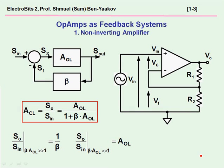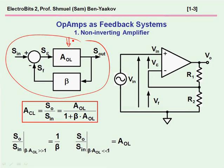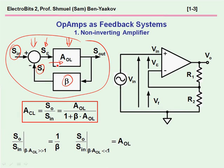The classical feedback model shown here includes the amplifier or the plant, a feedback path, and a summing point. In the summing point, we subtract from the input signal the feedback signal to generate the error signal, which is then fed to the amplifier. The output is sampled and part of it is fed back.